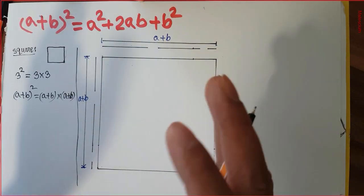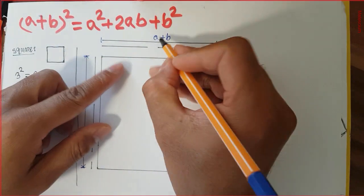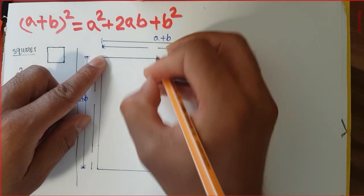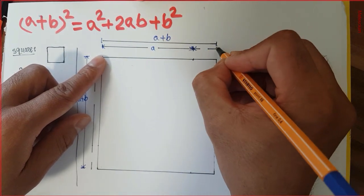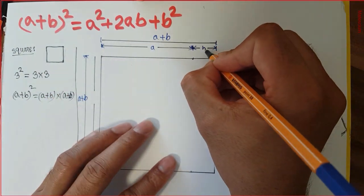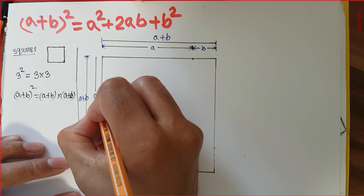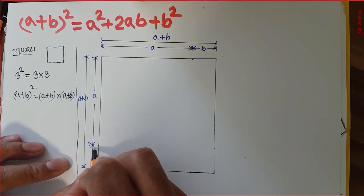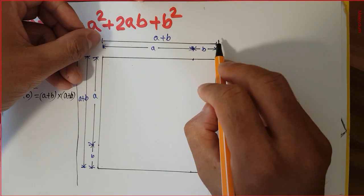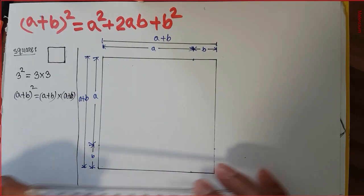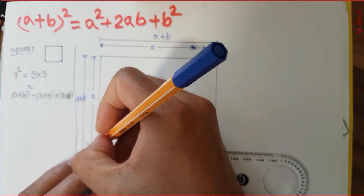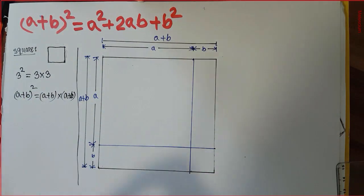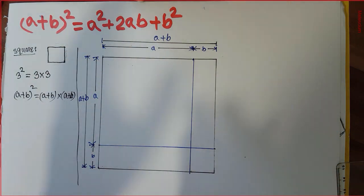Now let us subdivide this side length into two parts. (a + b) means this part — from this point to that point — is 'a', and from this point to that remaining point is 'b'. Similarly, this length up to that point is 'a', and from here to here is 'b'. This is the subdivision of the total (a + b) side length. Now if we draw a straight line across this direction and that direction, these two straight lines subdivide this entire large square into four different areas.